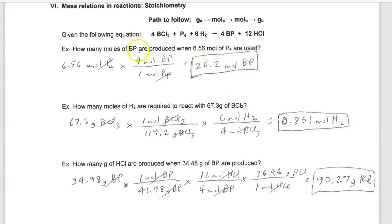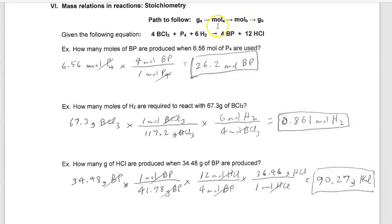First thing we do is ask ourselves what do we know. We know we've got 6.56 moles of P4. Where are we trying to go? We're trying to get to moles of BP. So now the question is how do I get from here to there? We consult the roadmap. We're starting with moles of A and trying to get to moles of B. The roadmap says I can get there in one step.